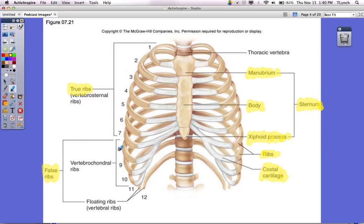Ribs 8, 9, and 10 we call vertebrochondral ribs. They are connected to the sternum, but indirectly. You can see that their cartilage actually fuses with the 7th rib. Then we have our two floaters down here, the floating ribs. They are not attached at all to the sternum. They're just kind of floating there.